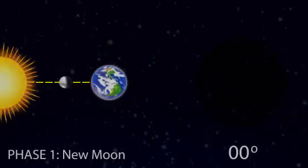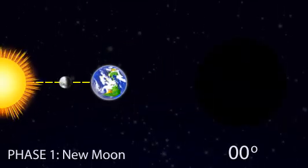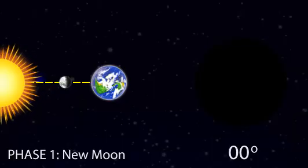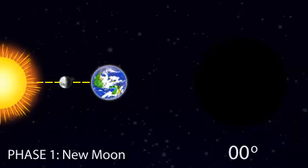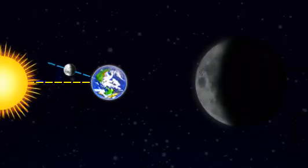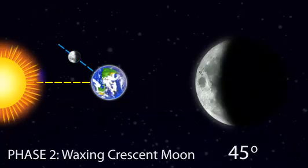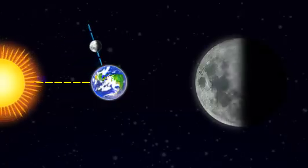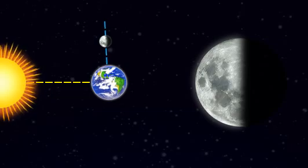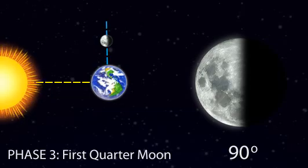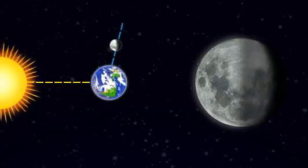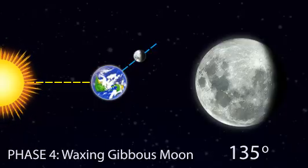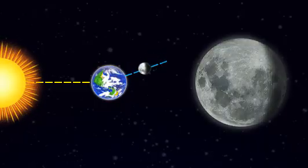Phase 1 is called the new Moon. In this phase, none of the illuminated half of the Moon is visible to us on Earth. Phase 2 is called the waxing crescent Moon. Phase 3 is called the first quarter Moon. Phase 4 is called the waxing gibbous Moon. Phase 5 is called the full Moon.